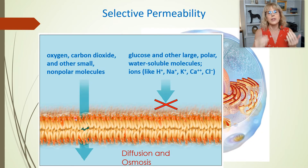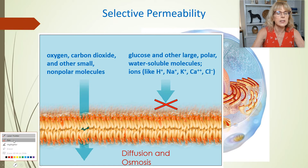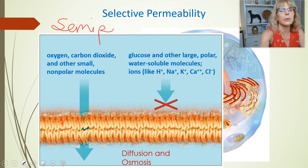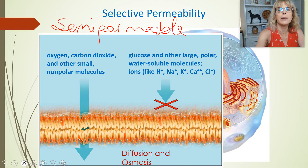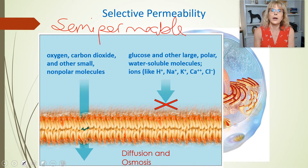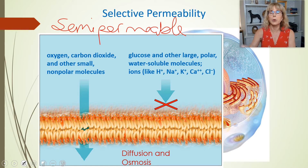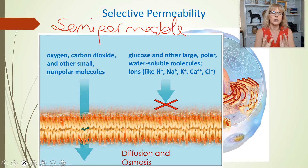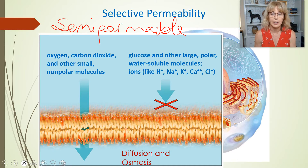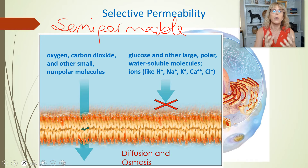Selective permeability — the phospholipid bilayer by itself is the selectively permeable membrane. Another word often used in textbooks for selectively permeable is semi-permeable, so those terms mean the same thing. In your lab manual, questions will say this membrane is permeable to certain substances but not permeable to others. If a question states something can go across and something cannot, you have a selectively permeable membrane — and that is required for the process of osmosis.